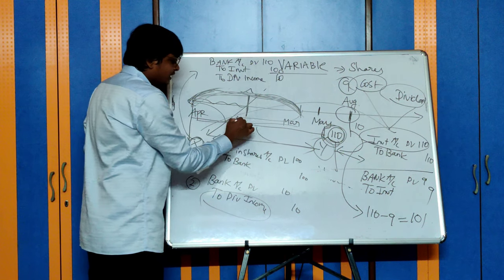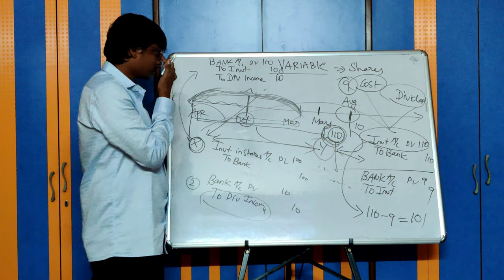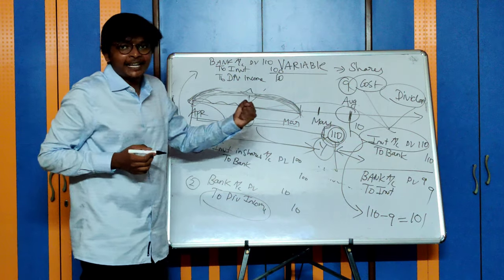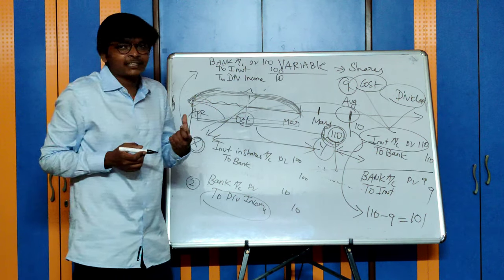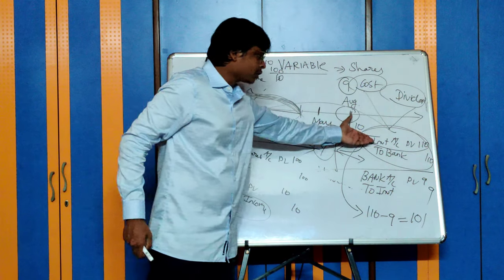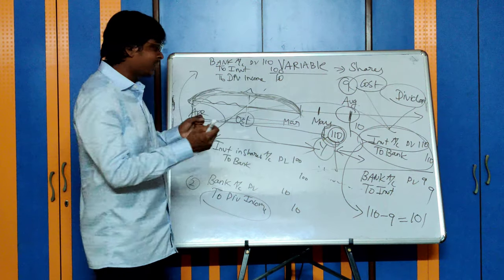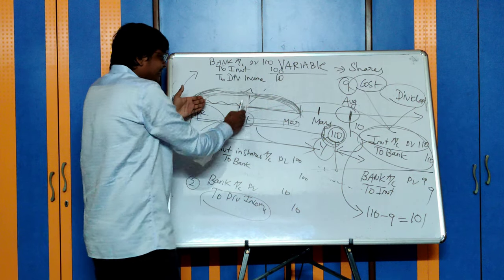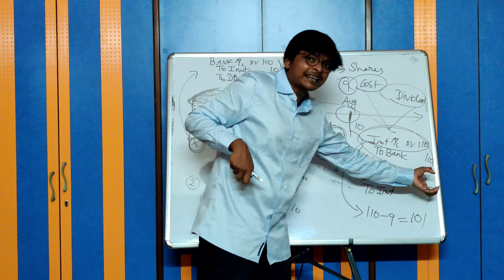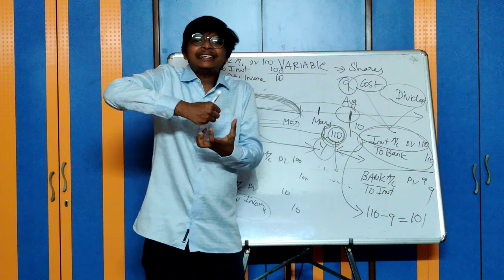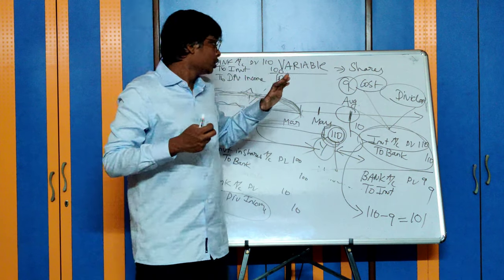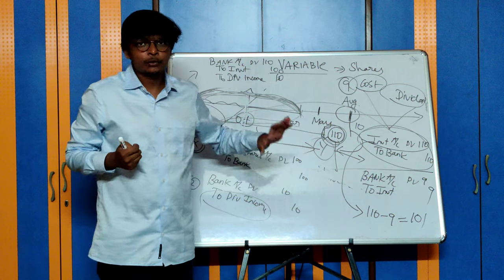Later, when the company declares a dividend — say Rs. 9 — normally you would pass: bank account debit to dividend income. But this Rs. 9 is not income for Y; it is received against his cost of investment. The actual cost of investment is not Rs. 110 — it has two components: the cost of the share and the dividend paid to X. Therefore, this amount of dividend will be reduced from your cost of investment, and investment becomes Rs. 110 minus Rs. 9 = Rs. 101. Y in his books will show his investment at Rs. 101. The logic: Y paid money for a share which includes the cost of the share plus dividend, because he became a shareholder after the year end.